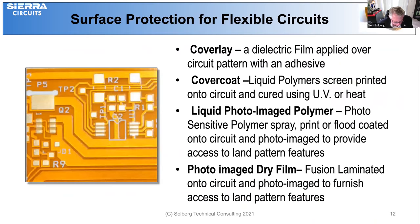As far as surface protection, after processing the flex circuit we want to protect the conductors on the surface, and there are several materials that can be used. The cover lake is a dielectric film similar to the base material. There's also a cover coat, which is a liquid polymer screen printed onto the surface and cured using UV or heat. Liquid photo image polymers are also available — a photosensitive material that is spray, print, or flood coated onto the surface and goes through a development process. And then there's the photo image dry film, which is fusion laminated onto the circuit and photo imaged to furnish access to the land pattern features.